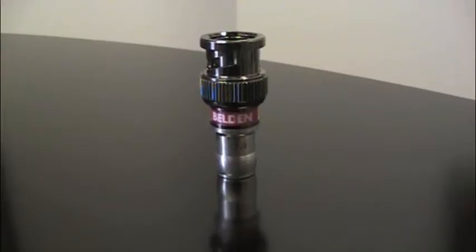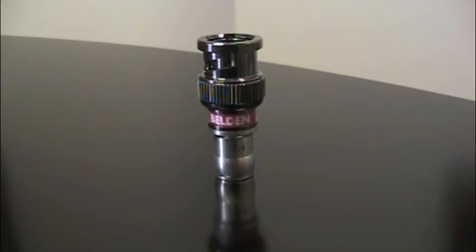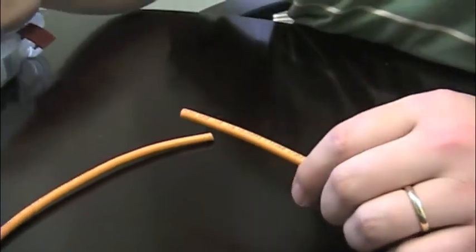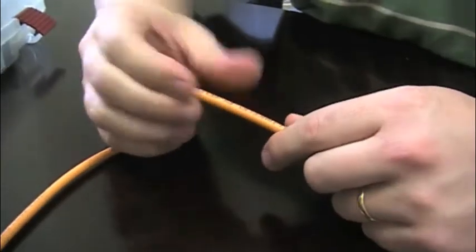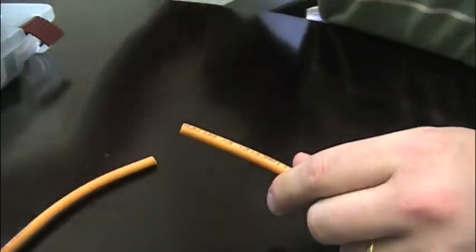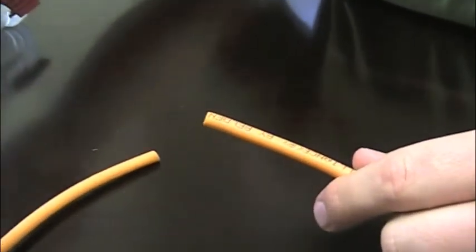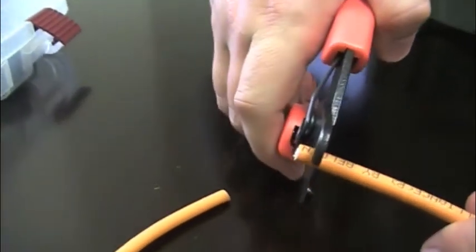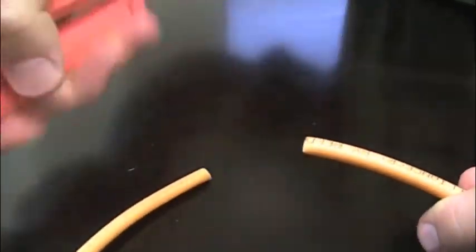Now we're going to show you how to terminate an RG59 cable with a BNC connector. As we stated before, when you're going to terminate any coaxial cable, you want to make sure that you have a nice perpendicular cut on the end of the cable. And to achieve that, the first thing you'll do is take a pair of cutters and make sure that you get a nice, even, perpendicular cut.